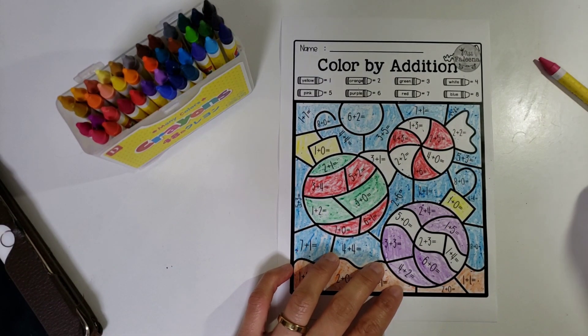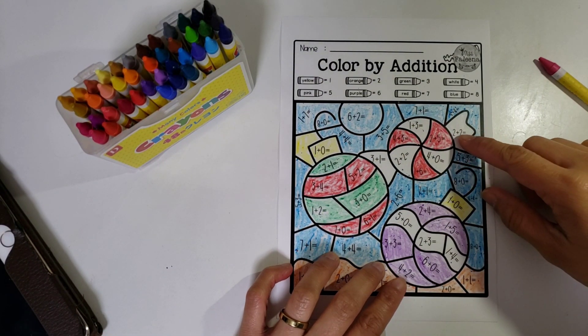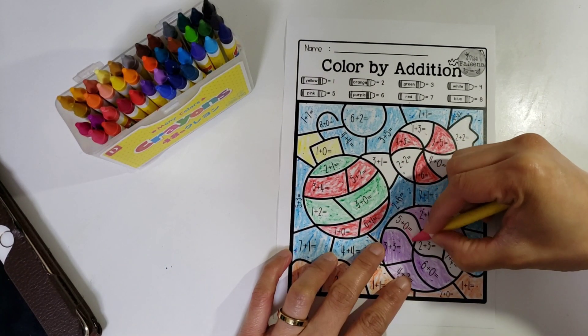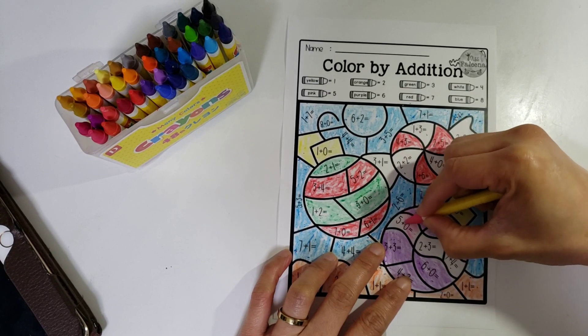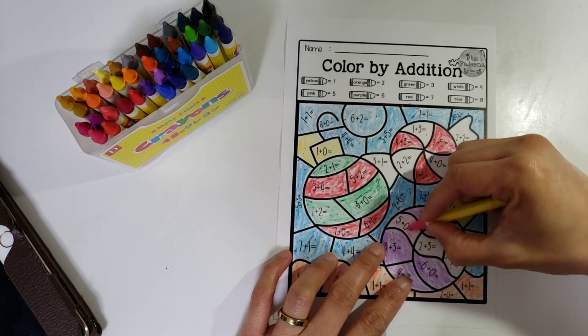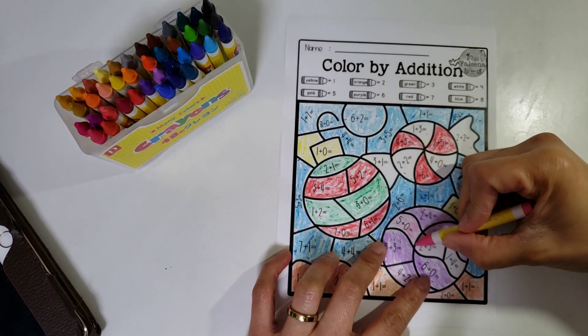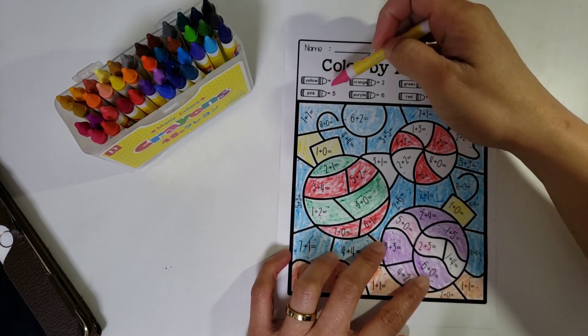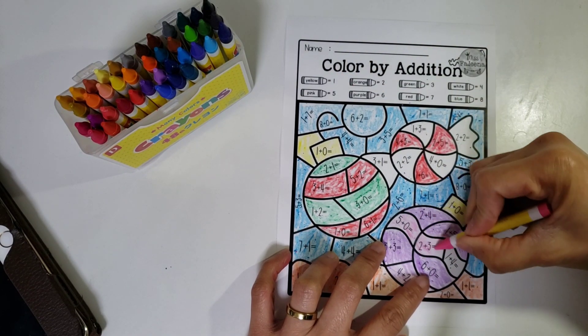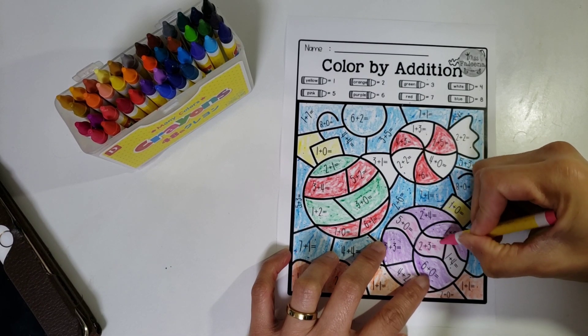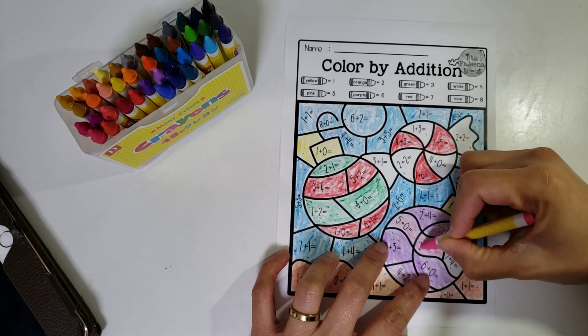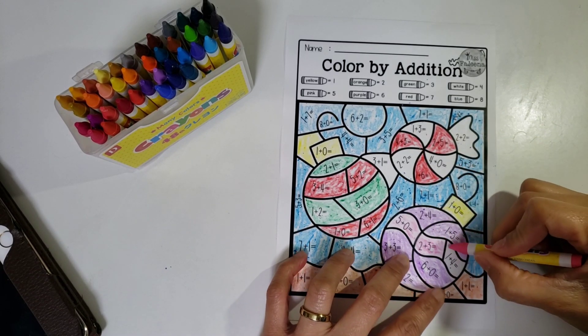So here guys, we're almost done. So let's do the pink. It's five plus zero equals five, and two plus three equals five. So five here, it's equivalent of pink color. One plus four, and then one plus four.